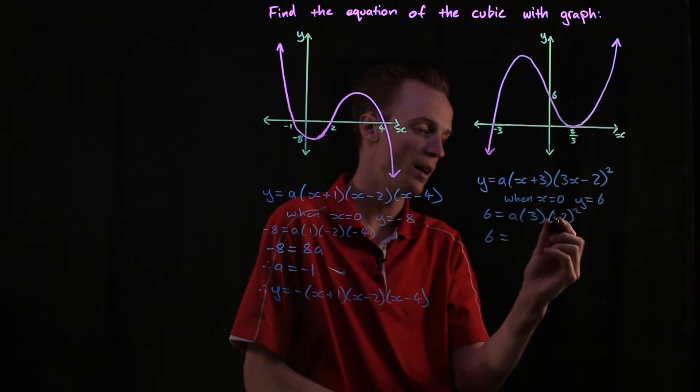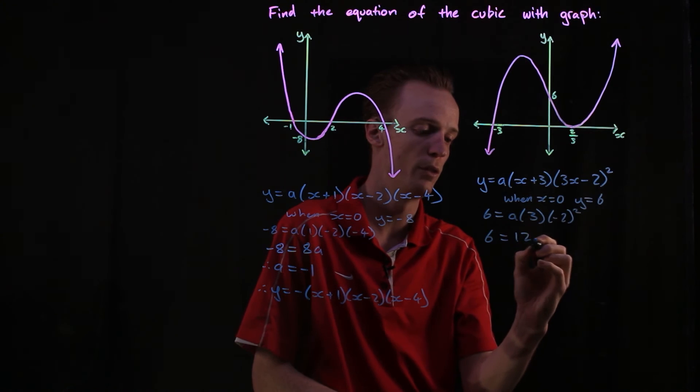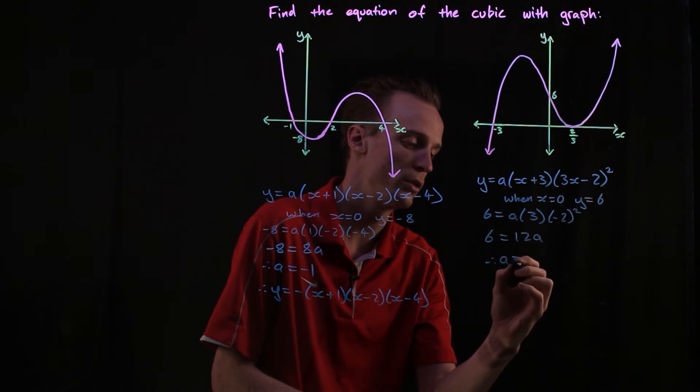Now we've got negative two squared is positive four. Three times four is twelve. So our a here is going to be six over twelve or one over two.